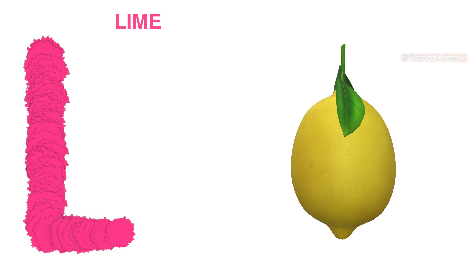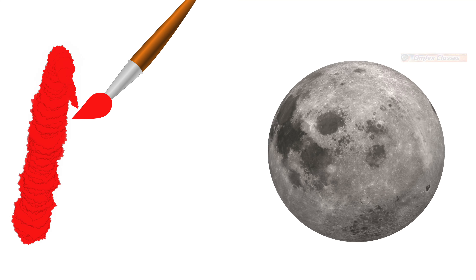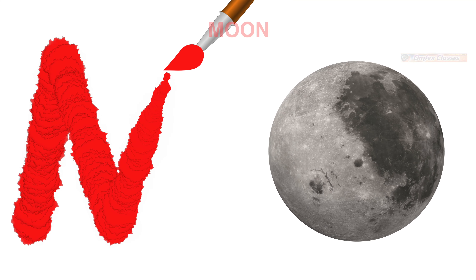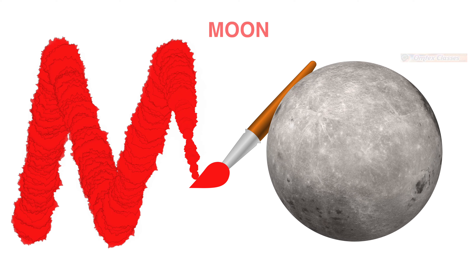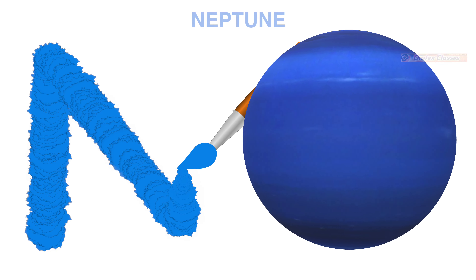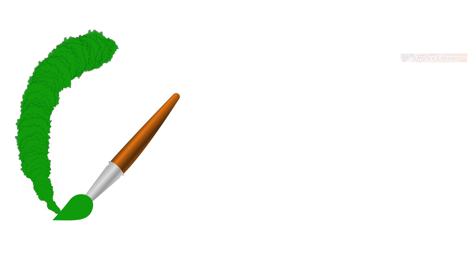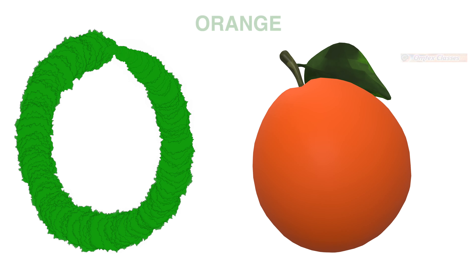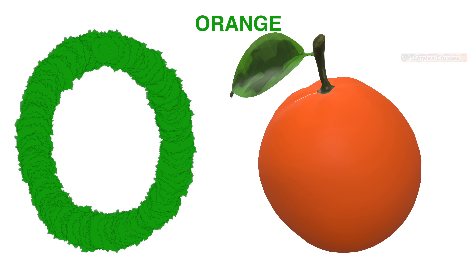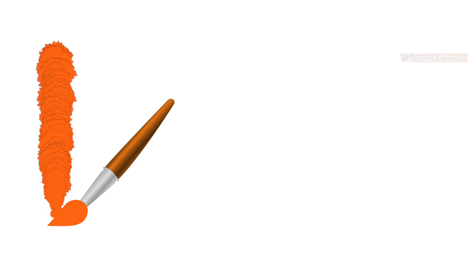K for kangaroo, L for lime, M for moon, N for Neptune.